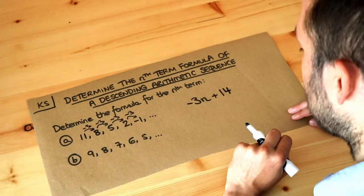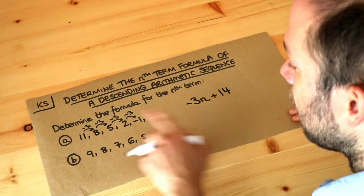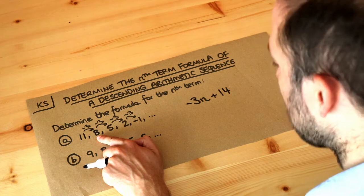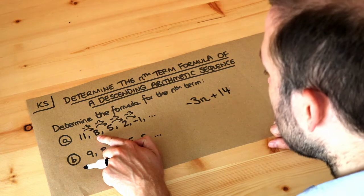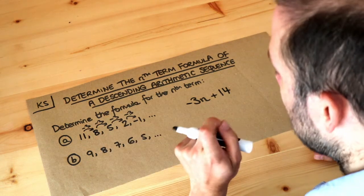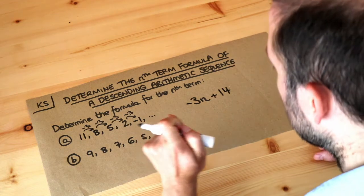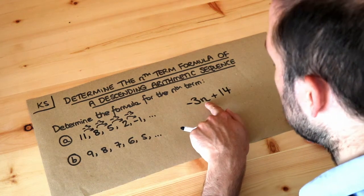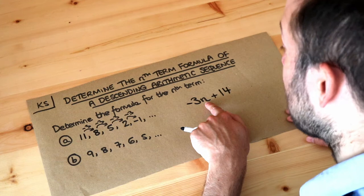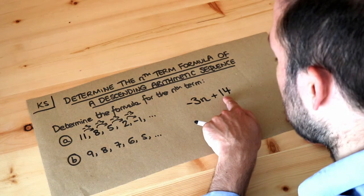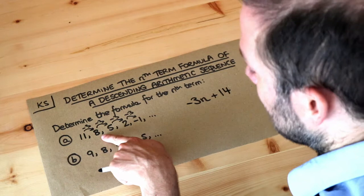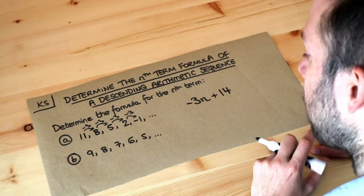And don't worry I do another example in a second. So let's just check that for the second term of the sequence just to be doubly sure that this is right. If we want the second term then n will be 2, so we do minus 3 times 2 which is minus 6, minus 6 plus 14 is 8 which is indeed the second term so our formula is definitely right.